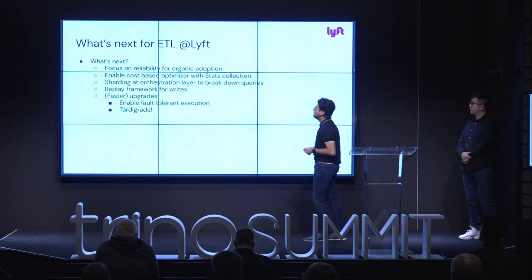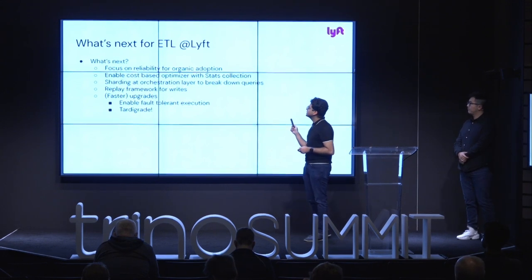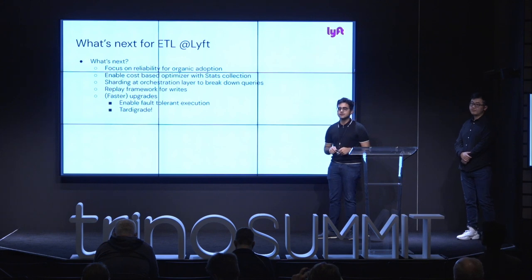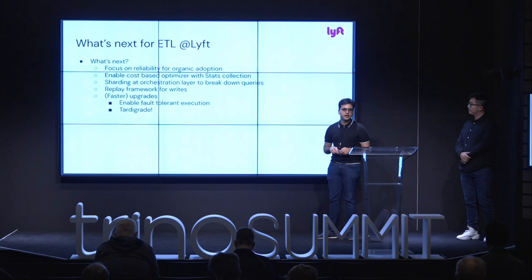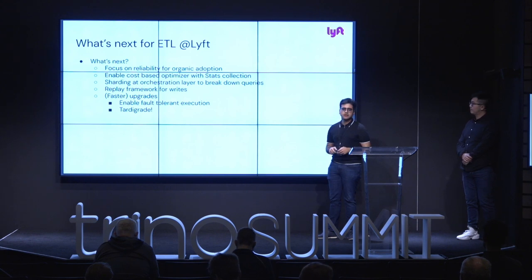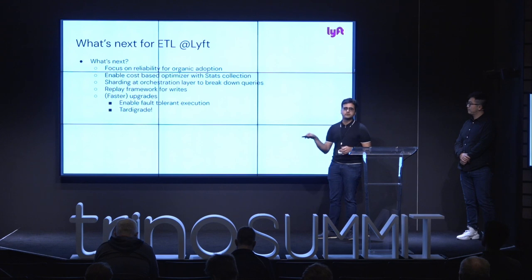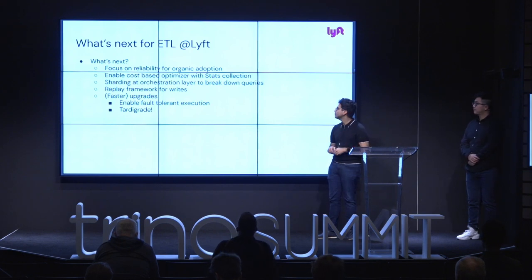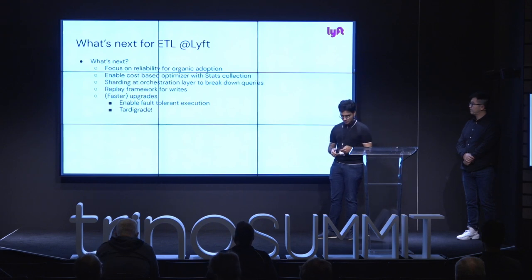Where are we focusing going forward? We want to ensure reliability. We want to re-enable stats and cost-based optimizer — we had turned it off about three years ago due to performance bottlenecks, but a lot has changed in Trino and we want to try that experiment again. Next half we'll probably implement a sharding operator — a custom Airflow operator that does horizontal sharding automatically, converting one massive query into multiple smaller queries targeting that 30-minute mark. We also want replay framework for writes, faster upgrades, fault-tolerant execution for ETL, and definitely tardigrade.